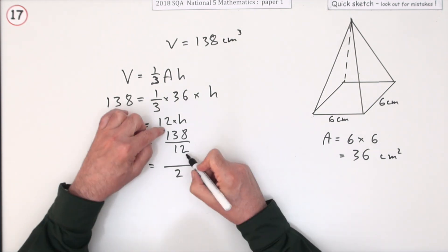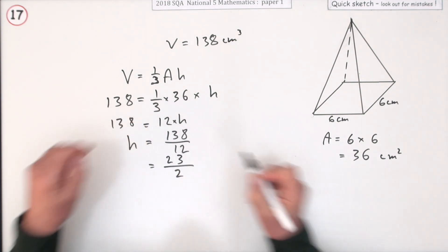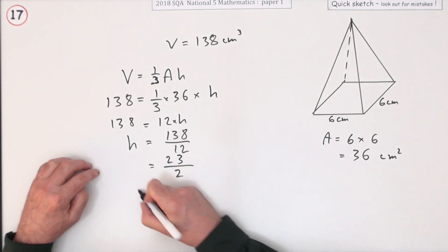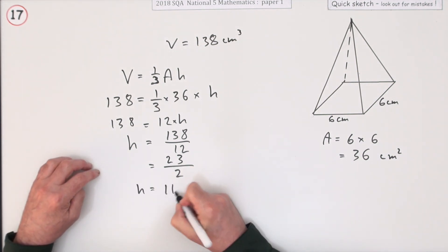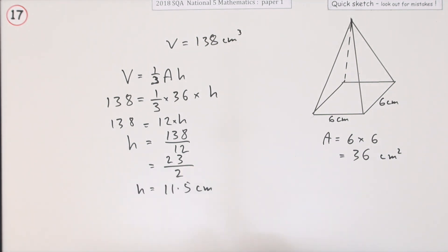6 into 12 goes 2. 6 into 13 is 2 and 1 over. So that's 23 upon 2. Now I can handle that. Half of that's 11.5 centimetres.